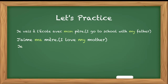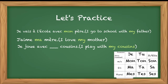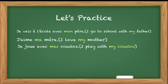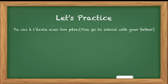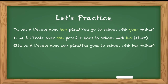One more example: 'Je joue avec ___ cousins' — I play with my cousins. The thing possessed is cousins, which is plural. In the table, what is used with plural is mes. Je joue avec mes cousins. Similarly, 'Tu vas à l'école avec ton père' — you go to school with your father. If the subject becomes il: 'Il va à l'école avec son père' — he goes to school with his father. And if the subject becomes elle: 'Elle va à l'école avec son père' — she goes to school with her father.